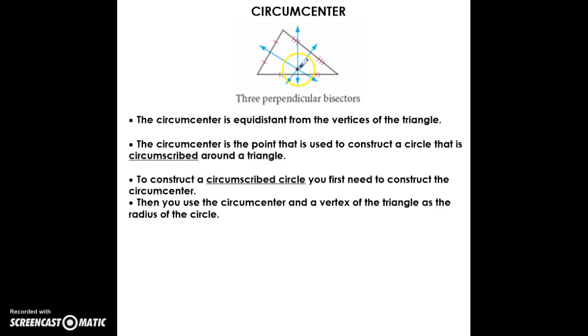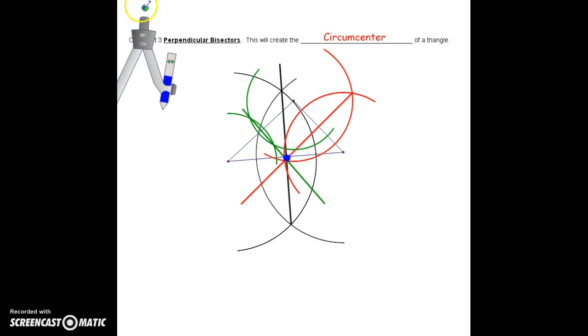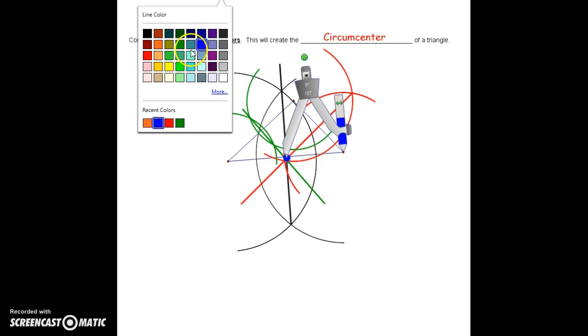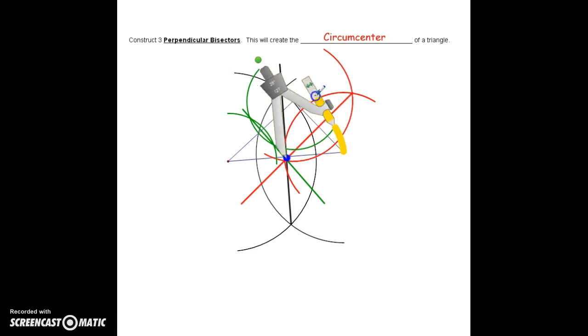To construct that, you would need to first construct your point of concurrency here, your circumcenter. Then you're going to place your compass point on that point and your pencil on one of the vertices, and you'll be able to swing it around. If I place my compass point here on my circumcenter and find one of the vertices, it should hit all three vertices of that triangle. That would be a circumscribed circle.